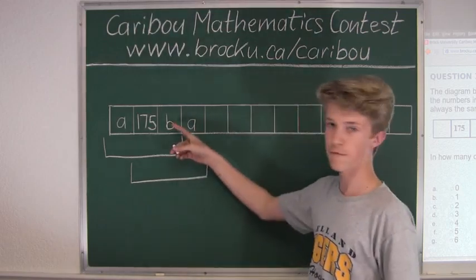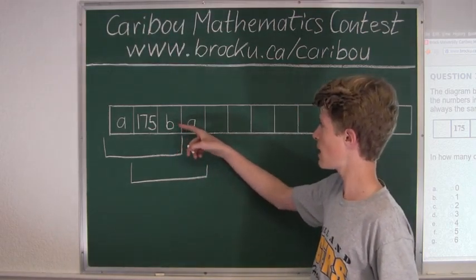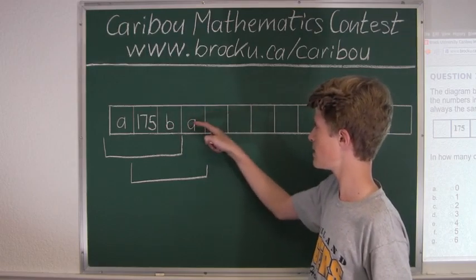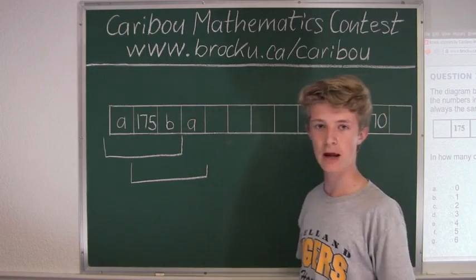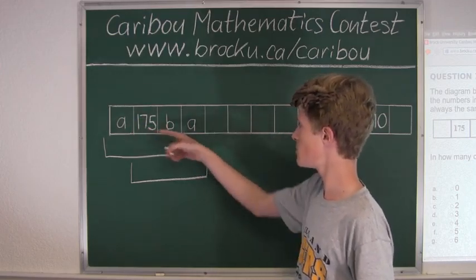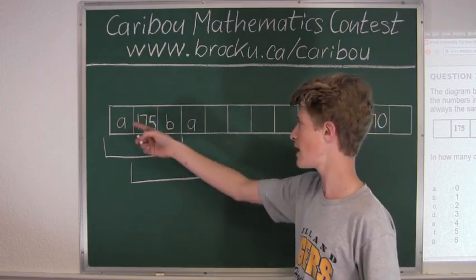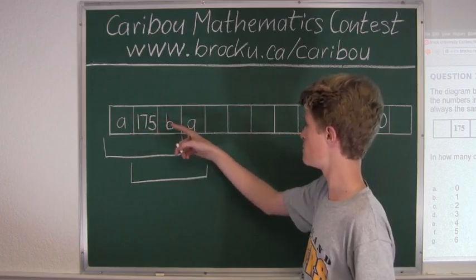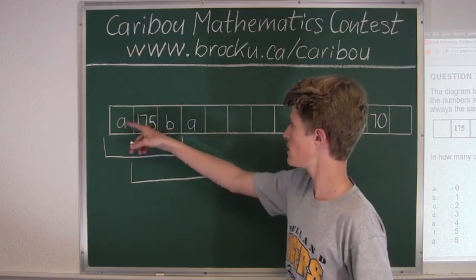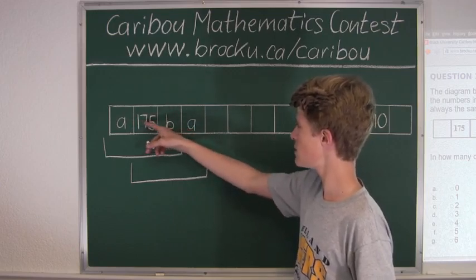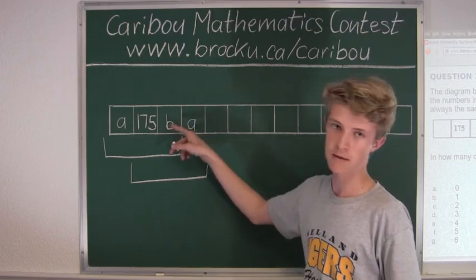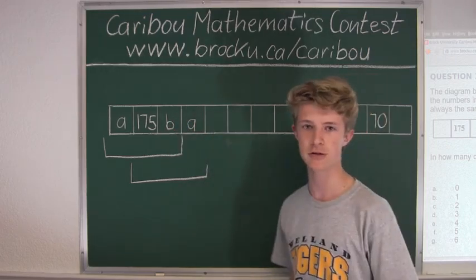So now we would start from B, and then we would have this group of 3 consecutive boxes: B, A, and the next number. And that would have to be the same sum as the sum of this group of 3 consecutive boxes, which is A, 175, and B. So we know that we have A and B, which is also here. And then here we added 175 to A and B, so we have A and B. We know that this must be 175.